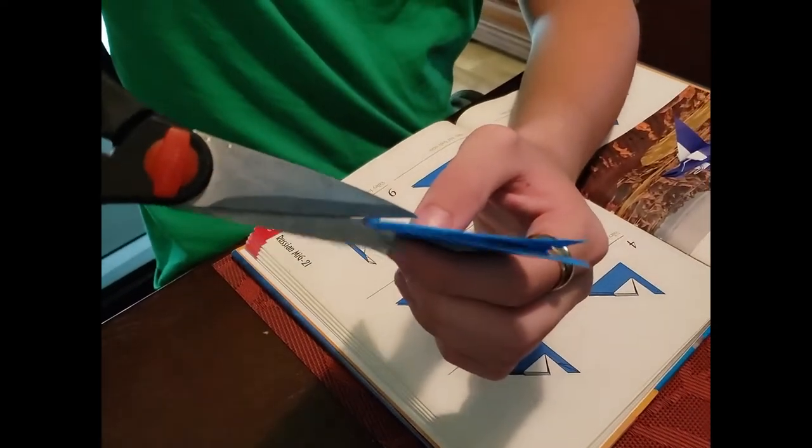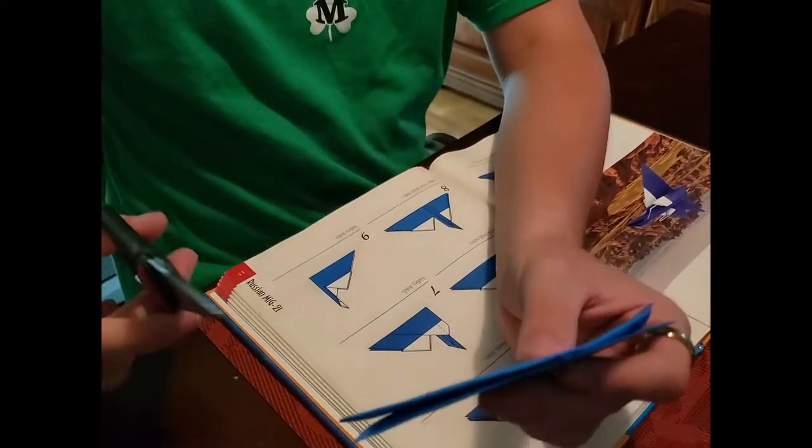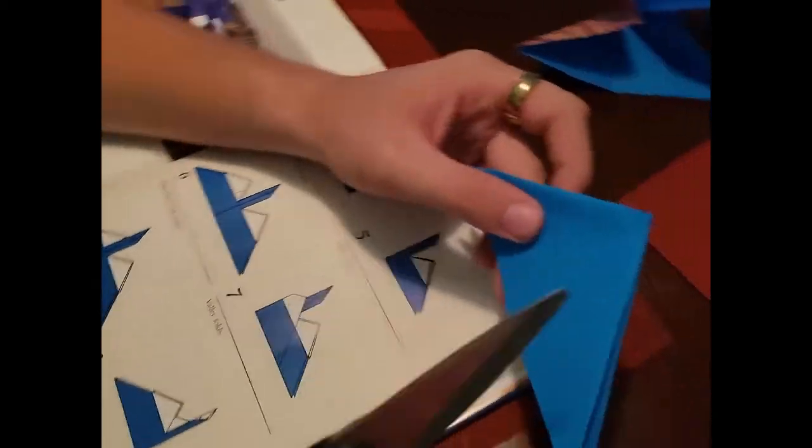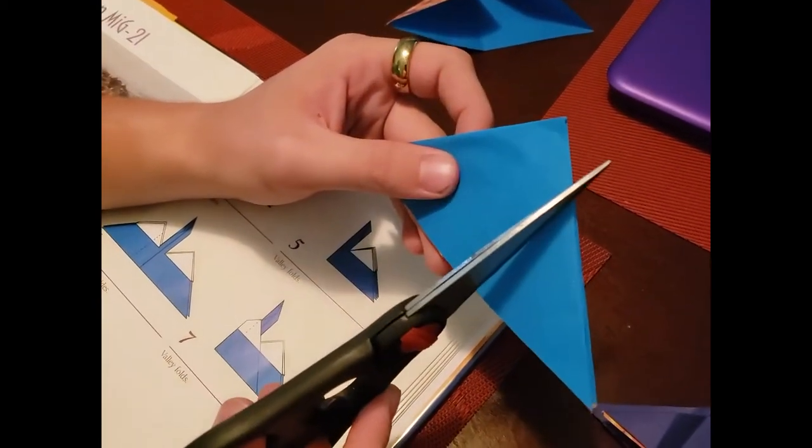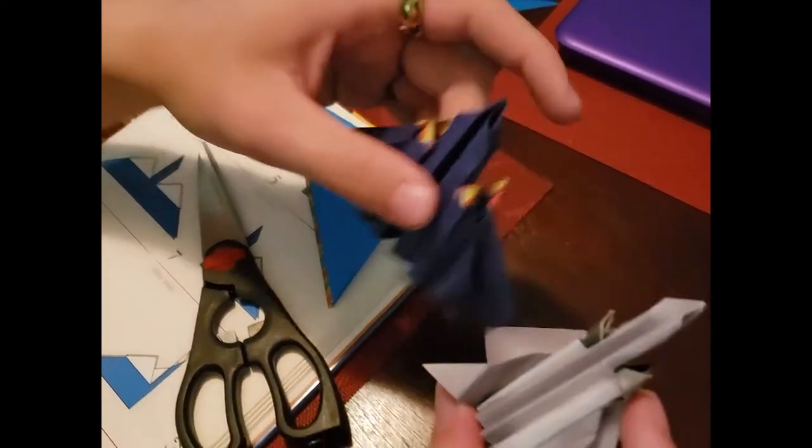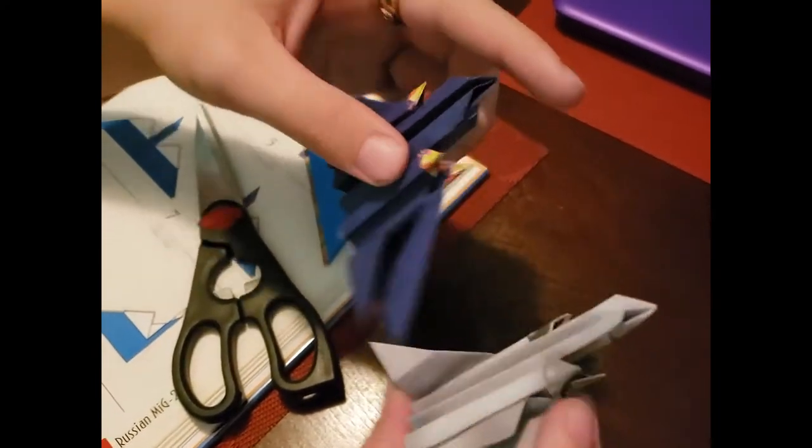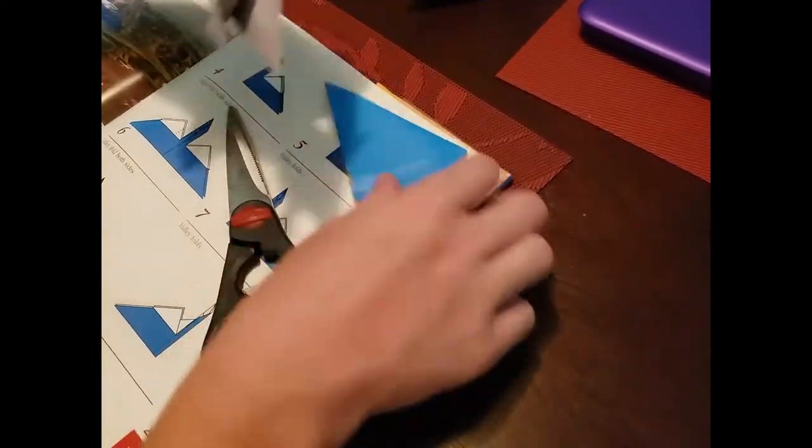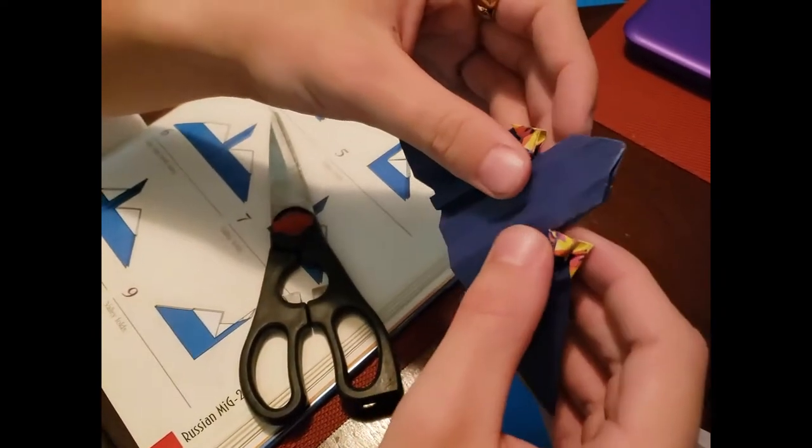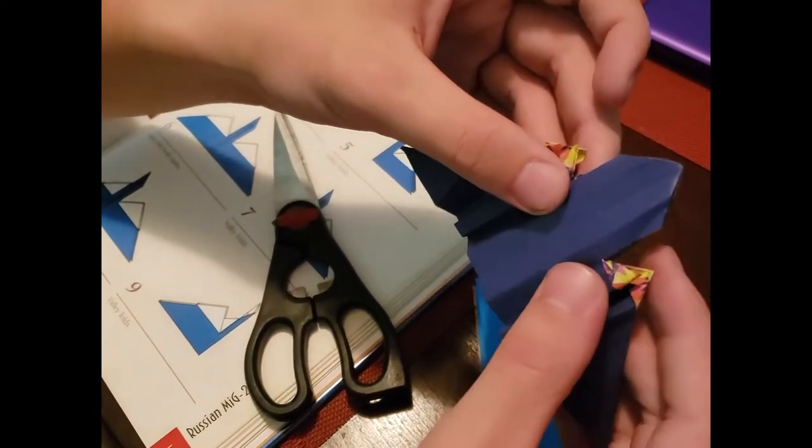You're going to take it on both sides here. Now this is important on your fold. Always remember this when you're folding these. The further away from the center you cut is how thick or thin your cockpit here is going to be. See I cut these ones closer to the center, so this one became thin.